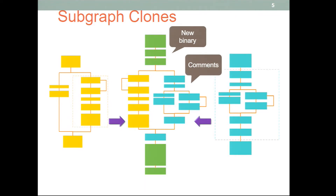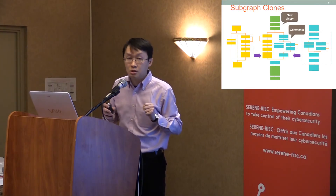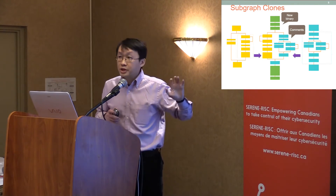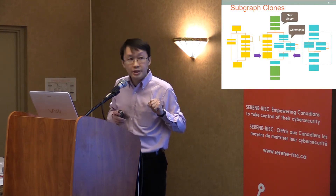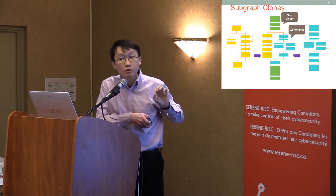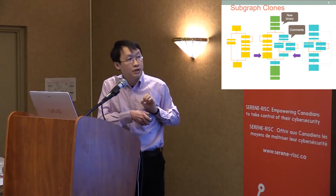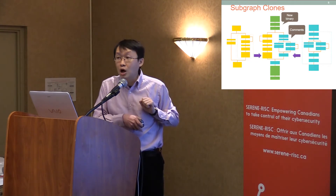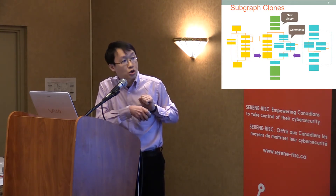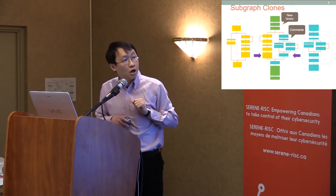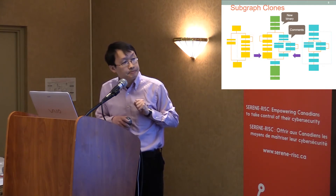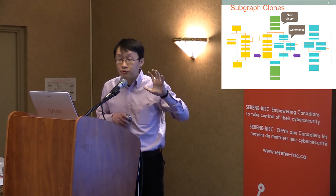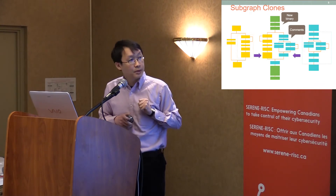The user can then start transferring comments from the repository to the new malware, so that the reverse engineer can focus on the rest of the functions of that malware. The data mining problem here is: how can we efficiently find these sub-graph clones from a large repository?